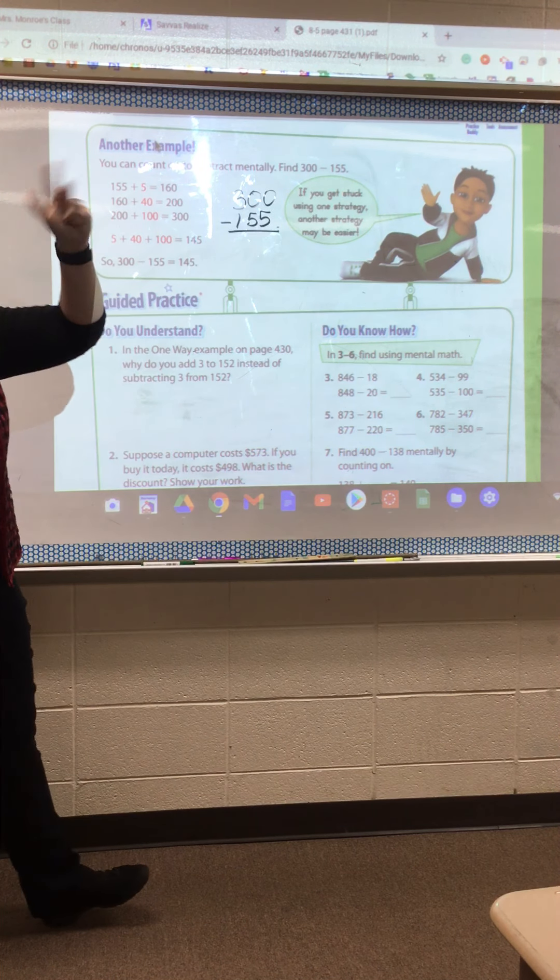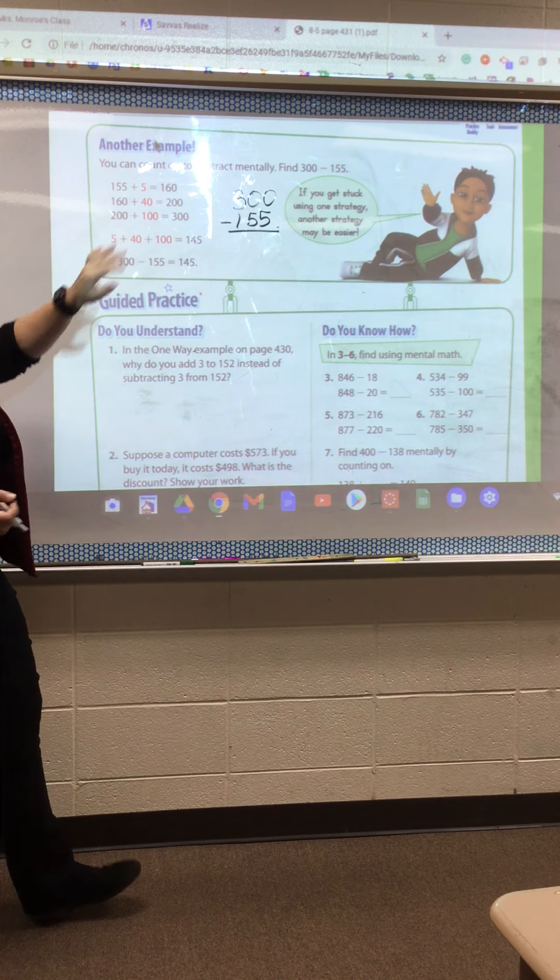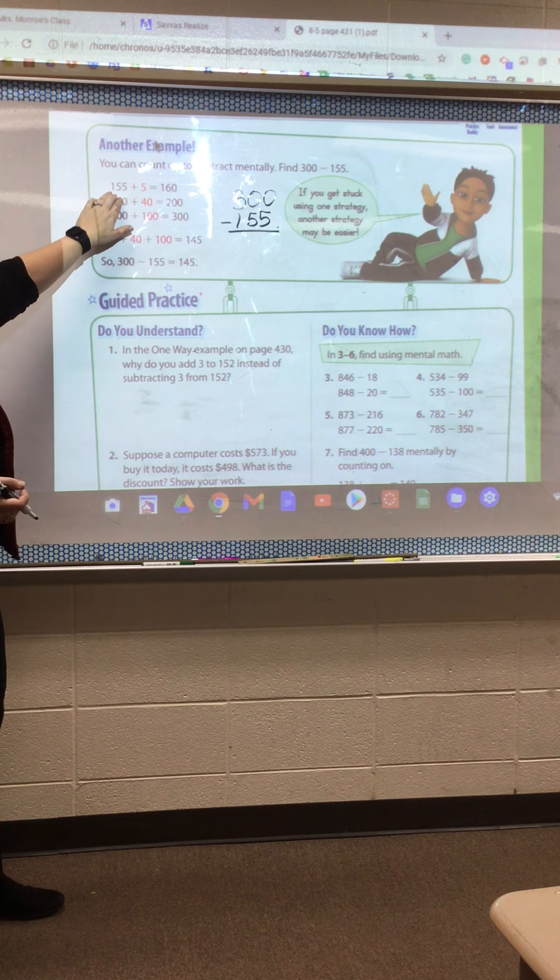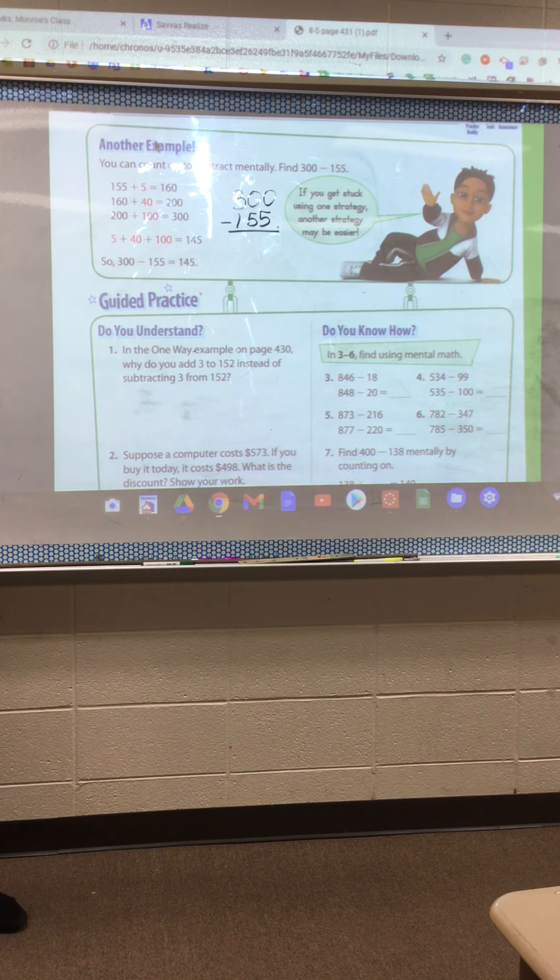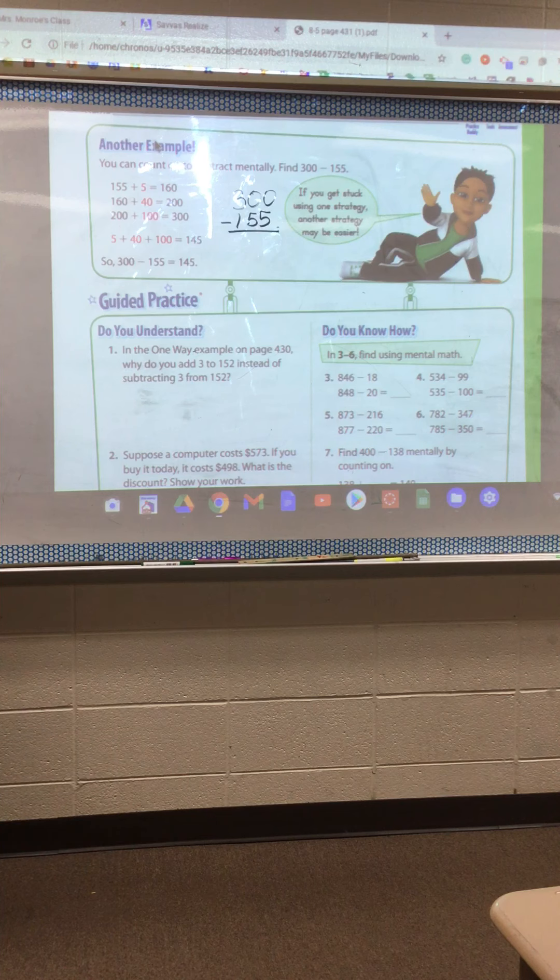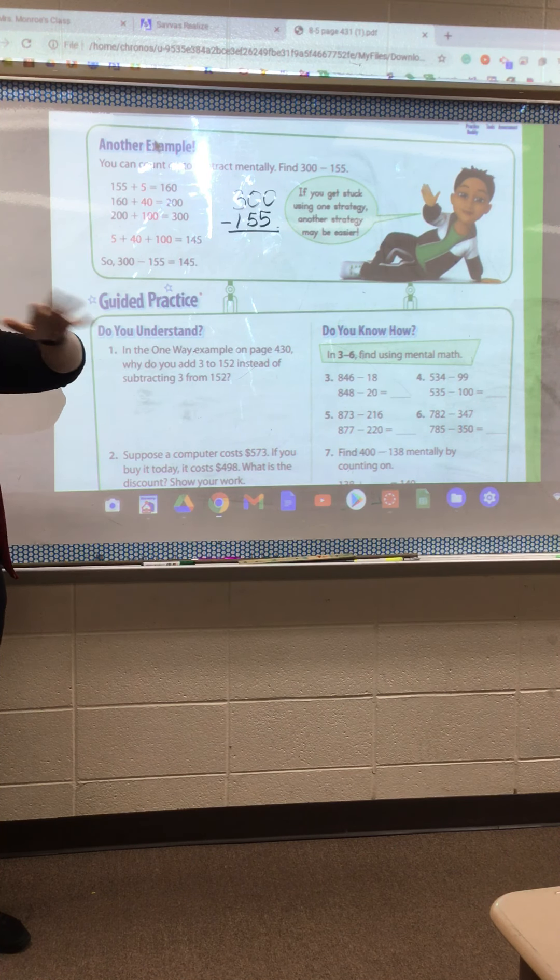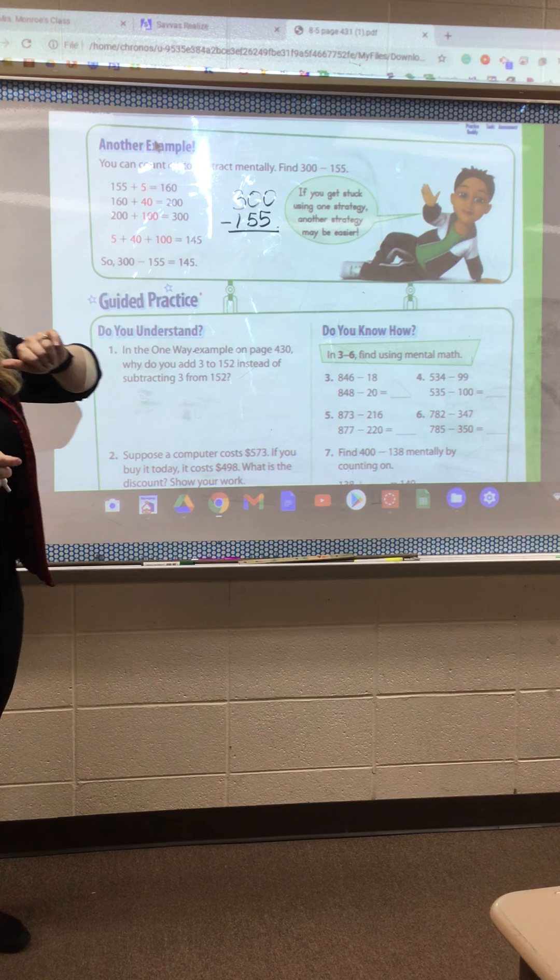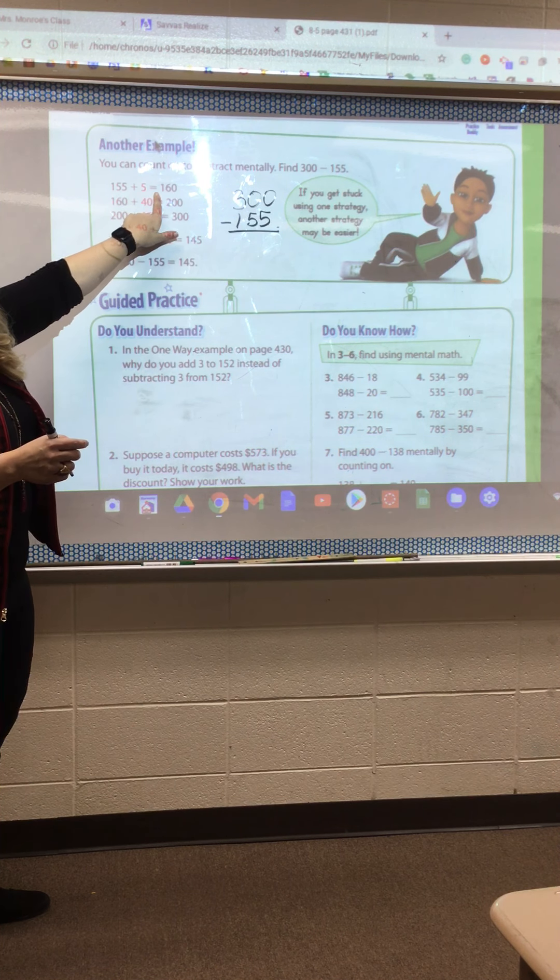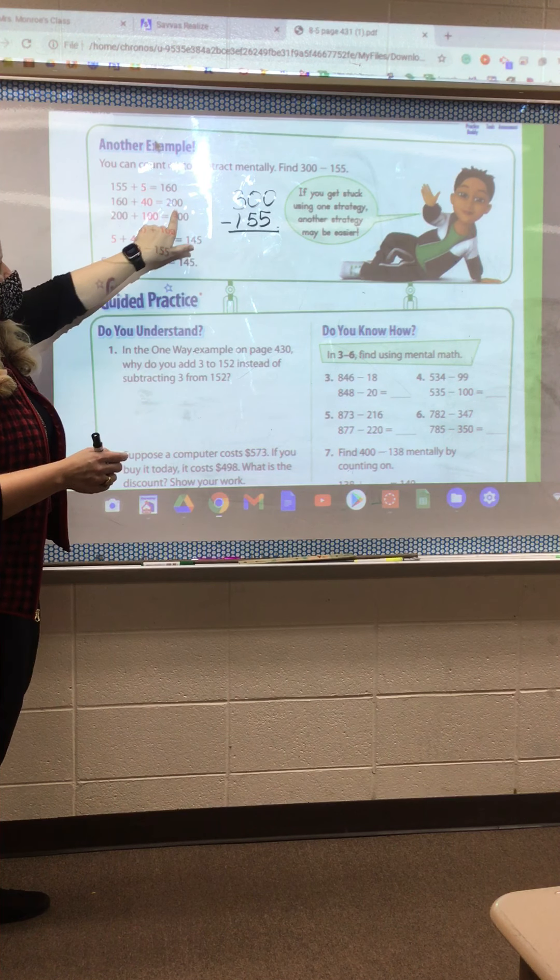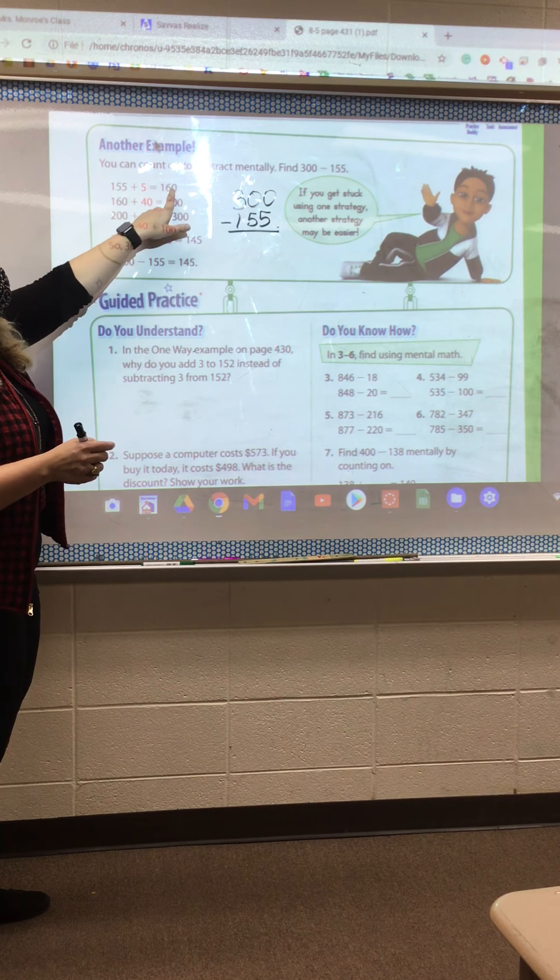We're trying to get to 300 and find the difference between 155 and 300. Just like when I have you count up on your fingers when you're subtracting, we're going to do it but with a bigger version. So I have 155. What gets me to 160? Five. What gets me there? Plus 5. See how they've done up here? So now I'm at 160. Remember, I'm trying to get to 300. So I've got my 5 to get me to a 10.